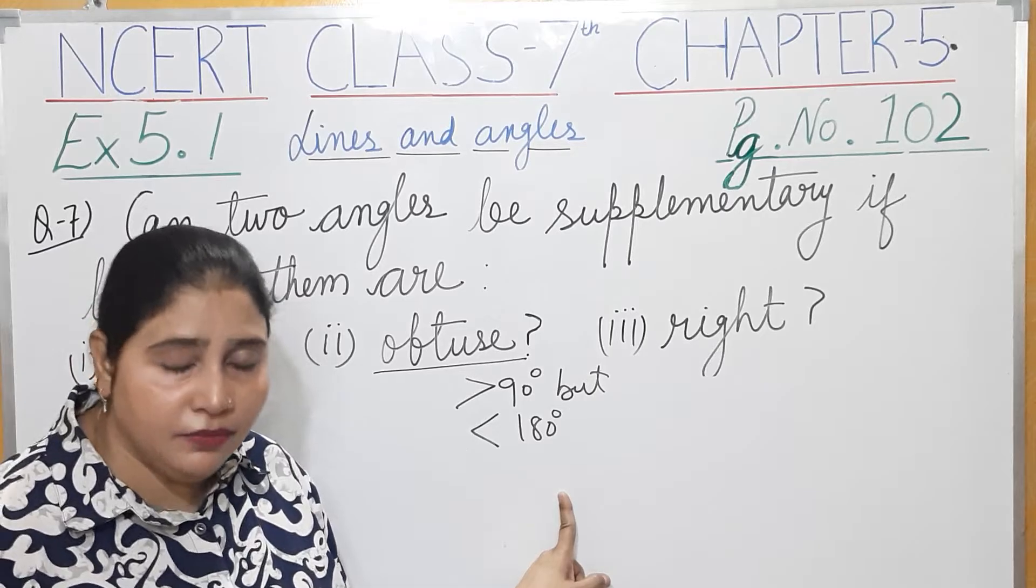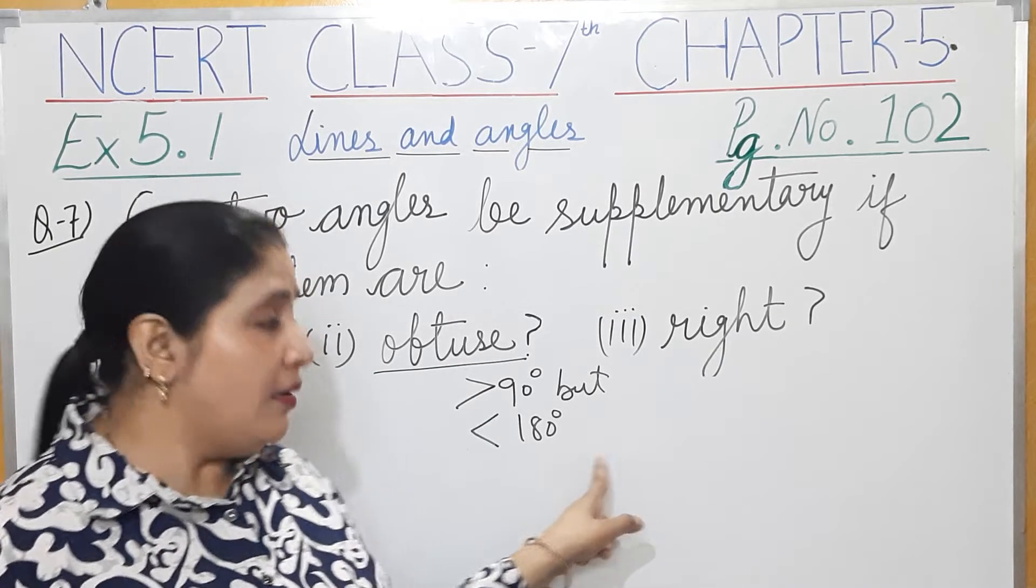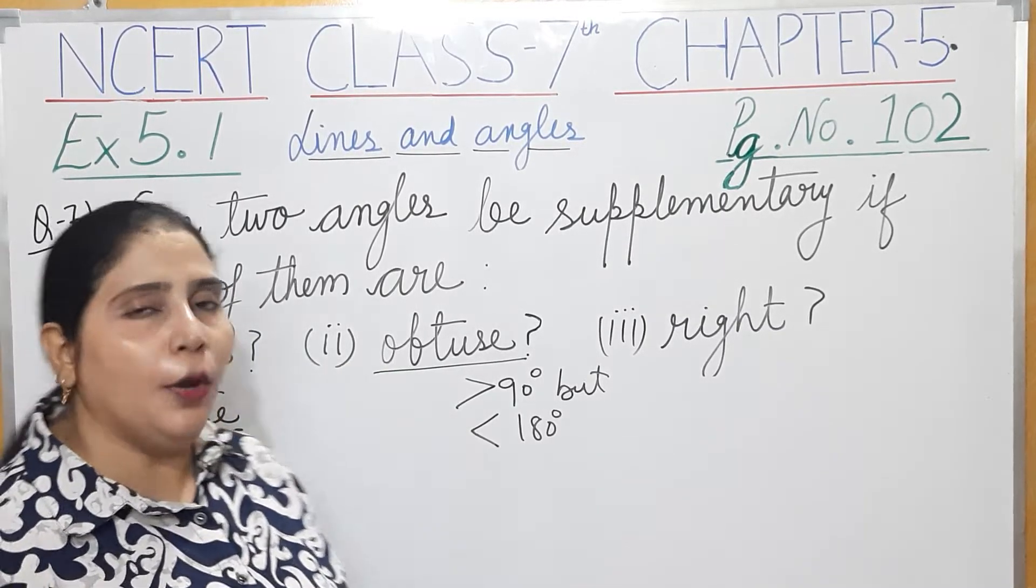91, 100, 102, 130, 140, 170, 179 - these are all obtuse angles.